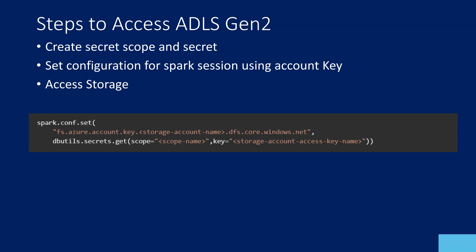Let's practically implement this. Anytime you want to access a storage account using an account key inside a notebook, you need to use this piece of code. Using the Spark session, you set configurations with the account key. The key format is: fs.azure.account.key, then your storage account name, then dfs.core.windows.net. For the value, you supply the account key — either hard-coded or retrieved from a secret scope.